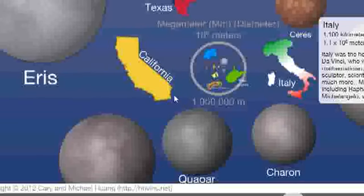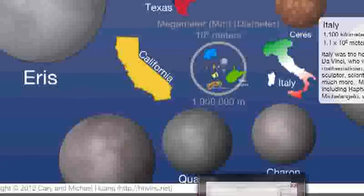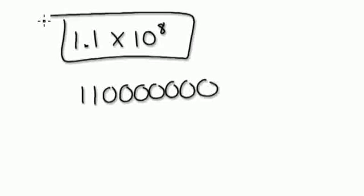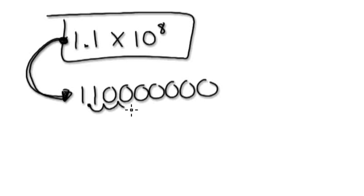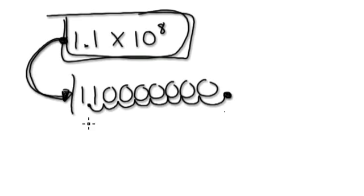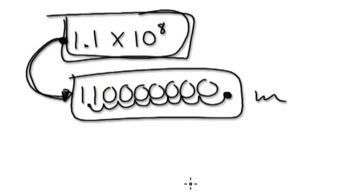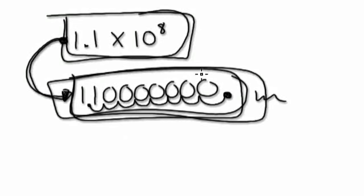If you click on Italy, it's 1.1 times 10 to the power of 8. Develop your own technique for jumping straight from standard form to decimal. Moving the decimal 8 places: 1, 1, then 1, 2, 3, 4, 5, 6, 7 zeros. So Italy is 110,000,000 meters long.